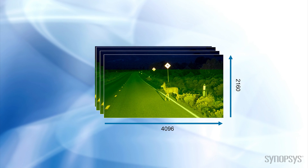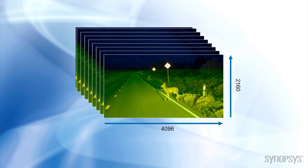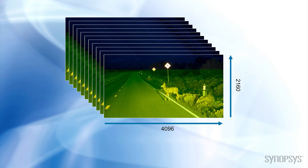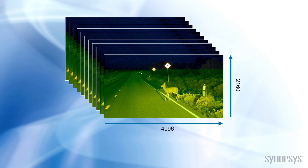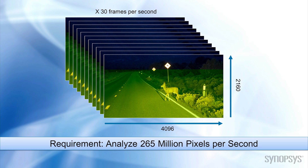Analyzing an image or a video takes a lot of processing power. There are over 8.8 million pixels in a 4K image. At 30 frames per second, the processor must analyze more than 265 million pixels every second.